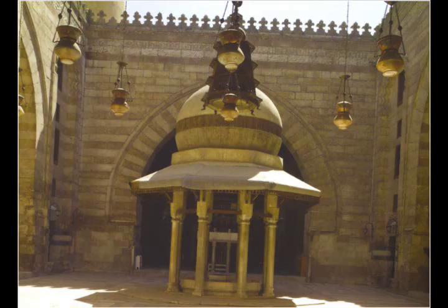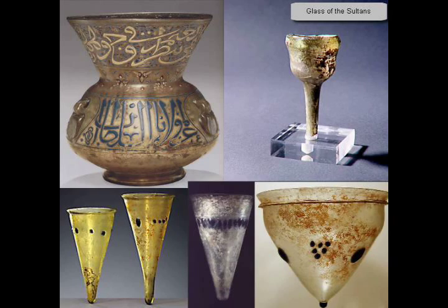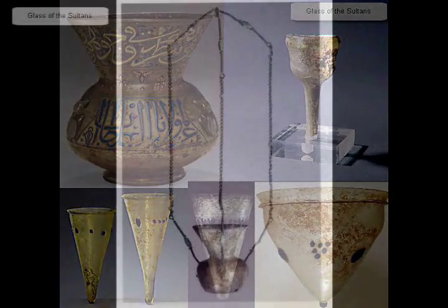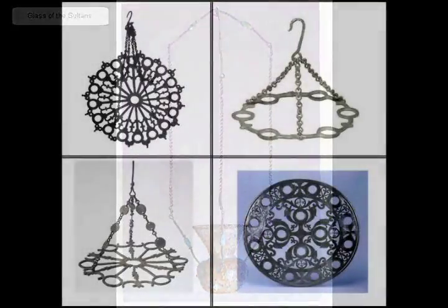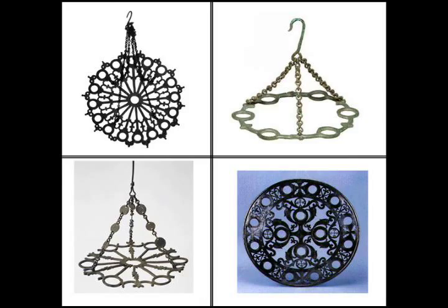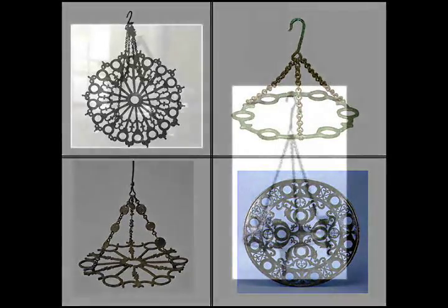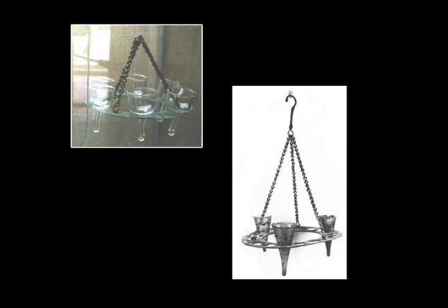These fixtures have much in common with earlier and contemporary Byzantine lighting systems drawing on the same Mediterranean traditions. Early mosques were lit by suspended single-jug glass lamps and by lamps on trays called polycandela. While the original fixtures of the 8th through 10th century Mosque of Cordoba have not survived, we have applied information gathered from other contemporary sites and artifacts to determine how this mosque's interior would have been lit.